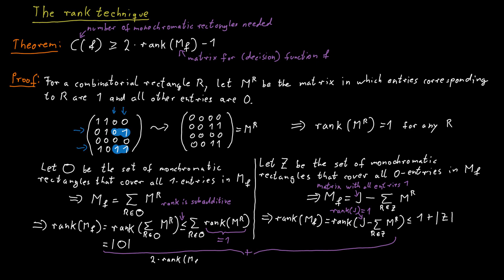The only thing left to do is to sum up both of those inequalities and we get that two times the rank of MF is less or equal to one plus Z plus O. Or we can rearrange this and say that two times the rank of MF minus one is less or equal to O plus Z. And O plus Z, that's just all the monochromatic rectangles that cover one entries and all the monochromatic rectangles that cover zero entries. So that's the number of monochromatic rectangles we have, which is C of F. And this proves the entire theorem.